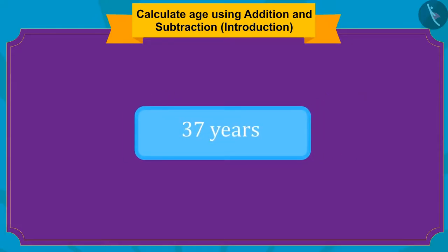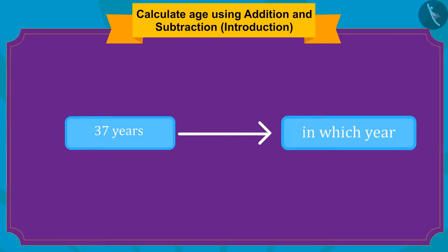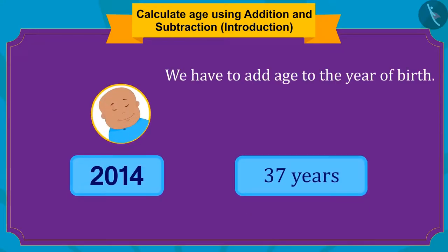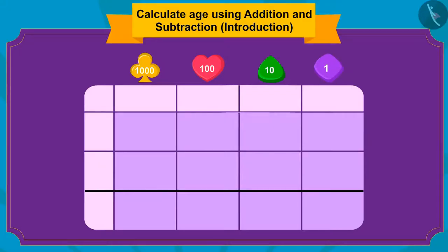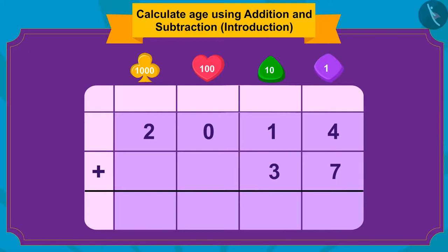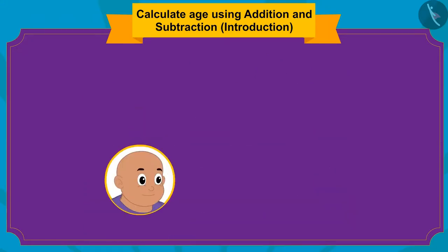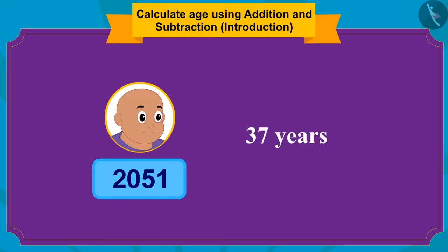Whenever we are given the age of a person and want to find out in which future year he will be of that age, then we only have to add that age to the year of his birth. In which year was Bablu born? 2014. And what age is given? 37. So, what shall we do? Exactly — 37 must be added to 2014. If you add 37 to 2014, how much is that? Right — 2051! In this way, Bablu will be 37 years old in 2051.